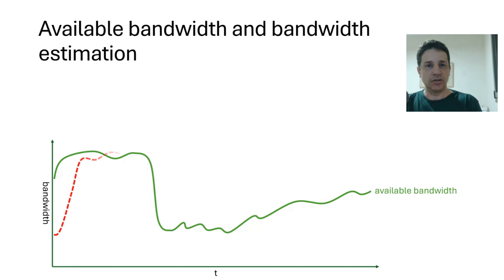Bandwidth estimation, or the estimated bandwidth, is what we think or what WebRTC thinks the available bandwidth is. It isn't exactly the available bandwidth because we don't really know that. That's kind of a theoretical value, but it's an estimation of that.